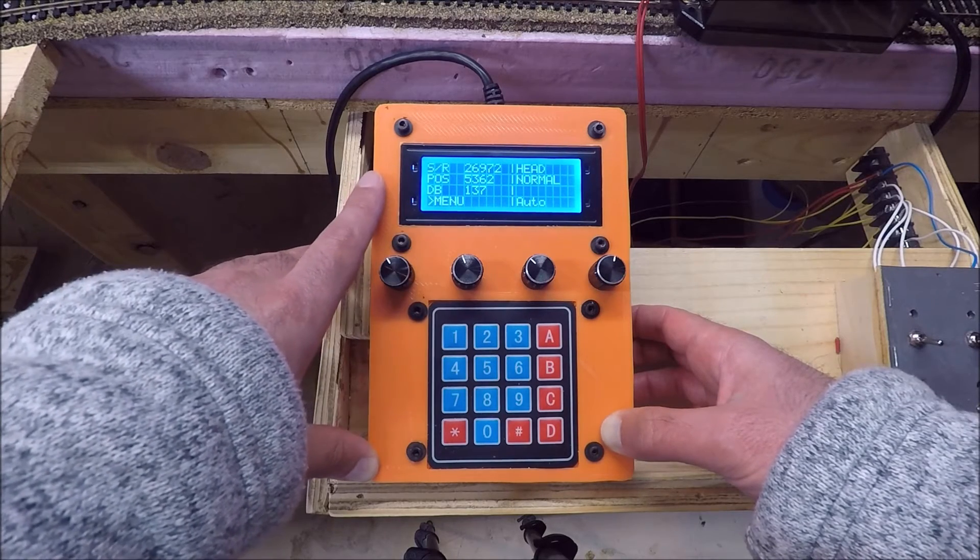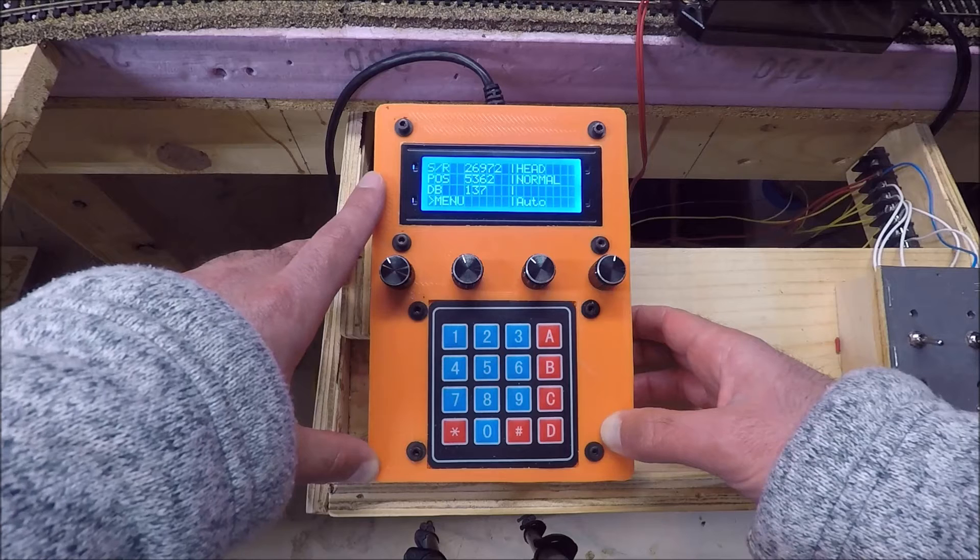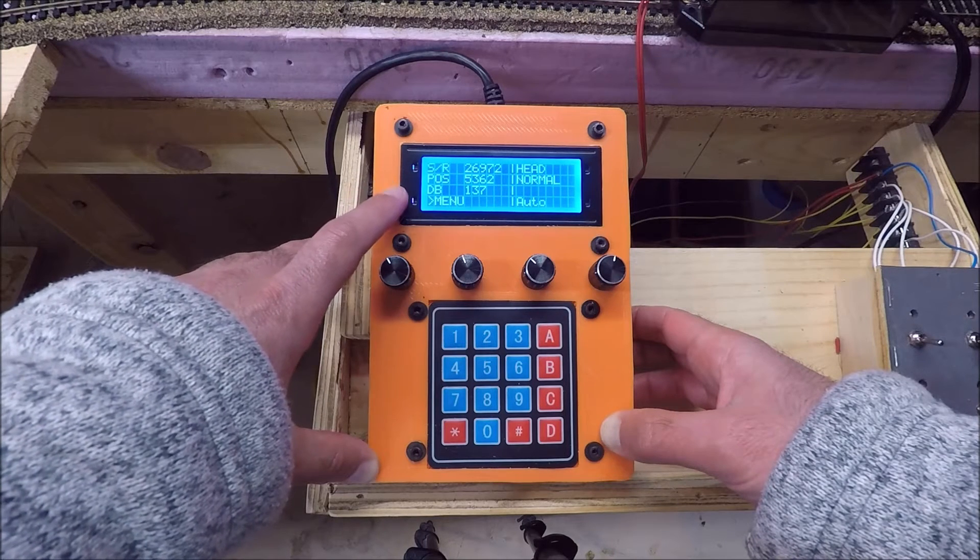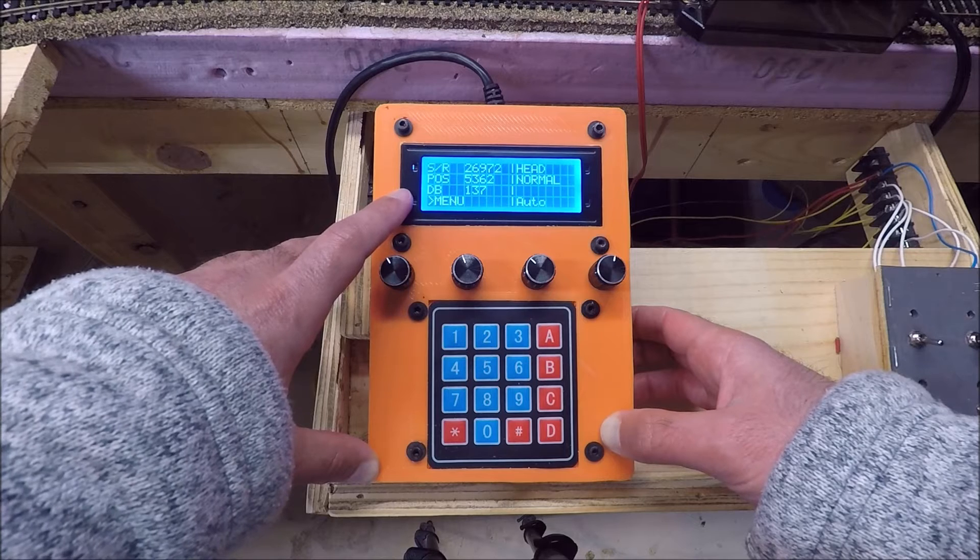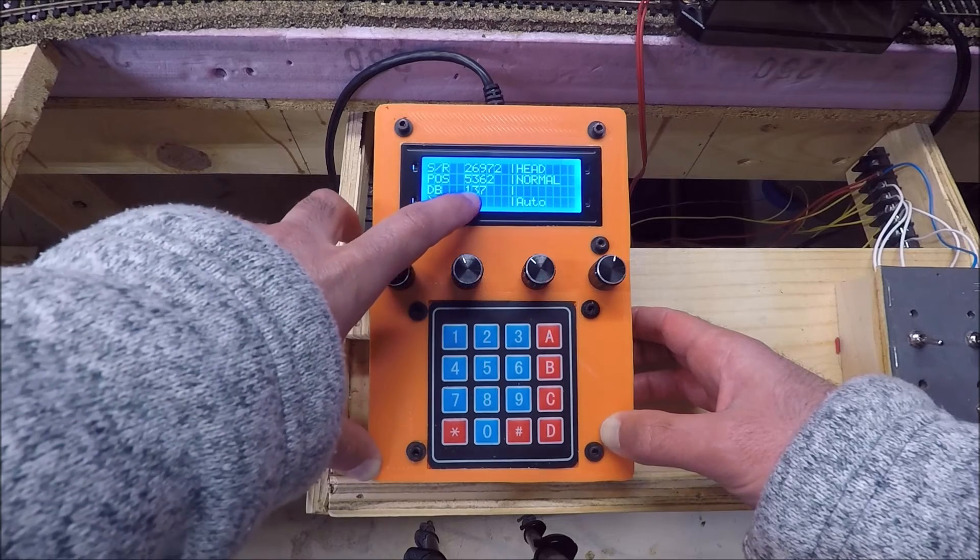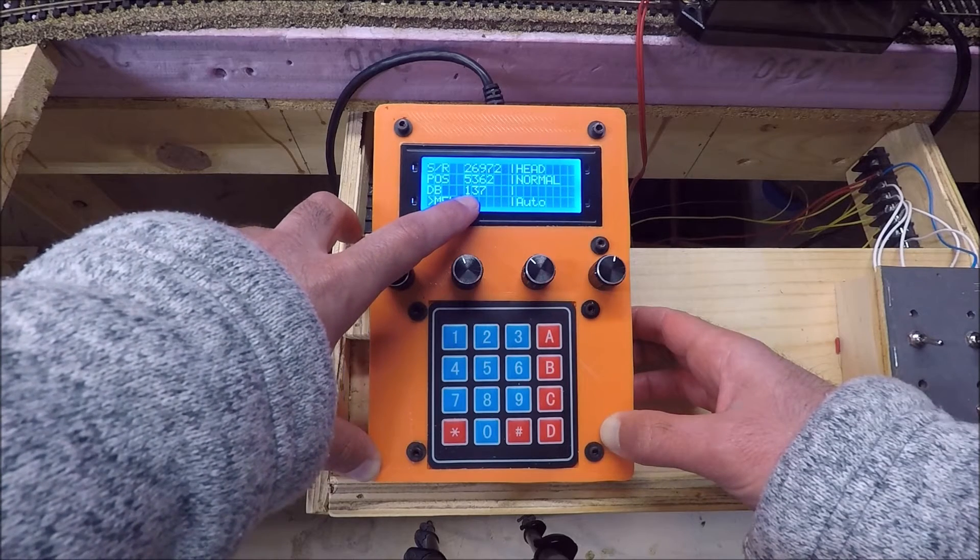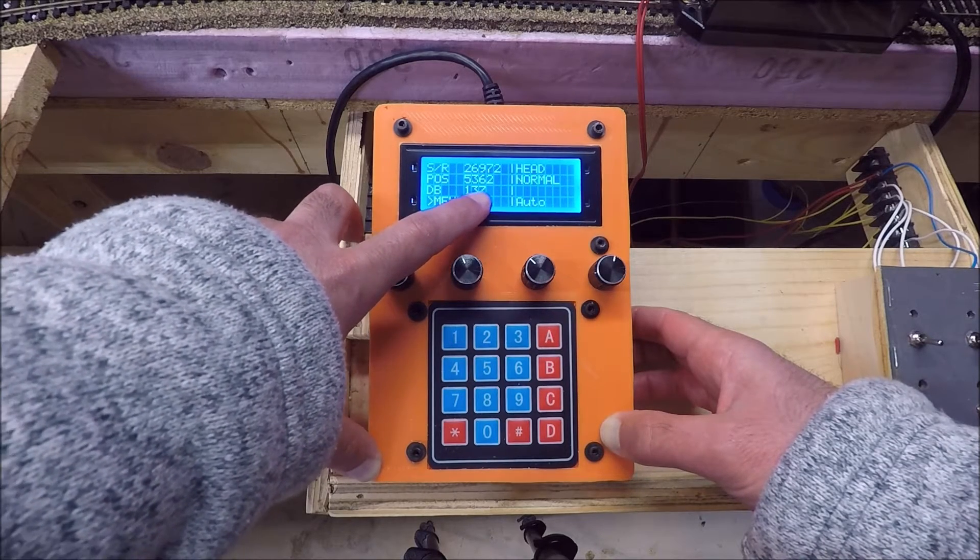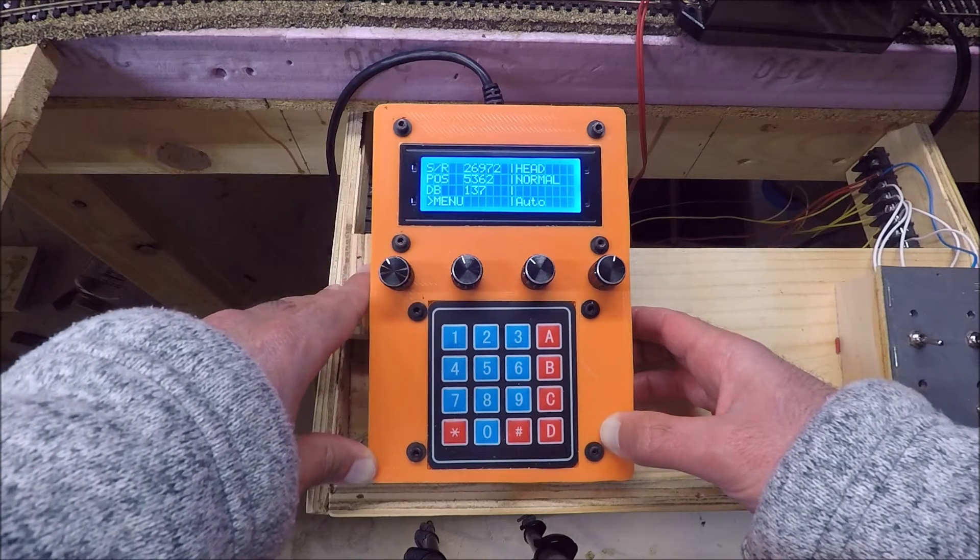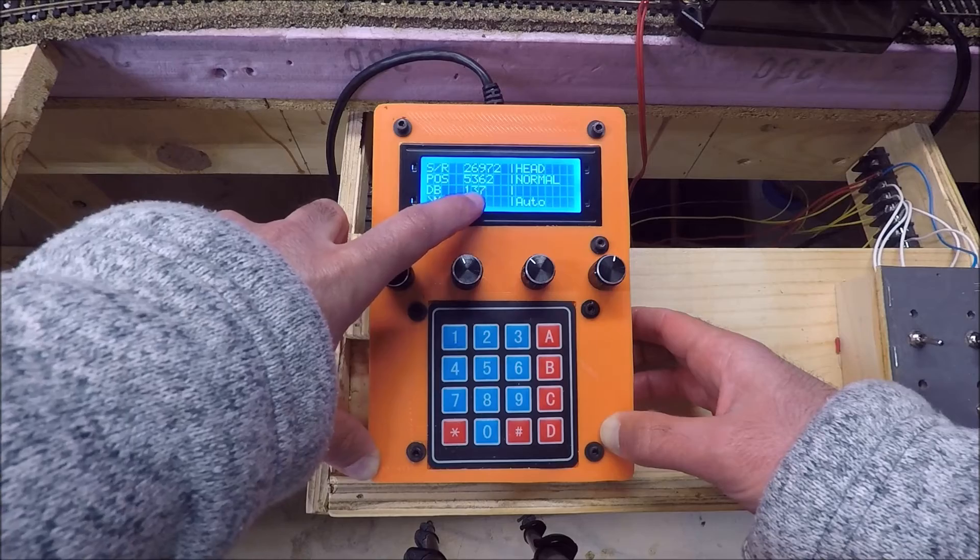DB stands for dead band. So since this design uses a hall effect sensor as a limit switch, there's a number of steps that the turntable moves that that hall effect sensor is active. And I call that the dead band. So this tells me that the dead band for this design is 137. That means 137 steps out of the basically 27,000 you can't program in. And it takes that into account.